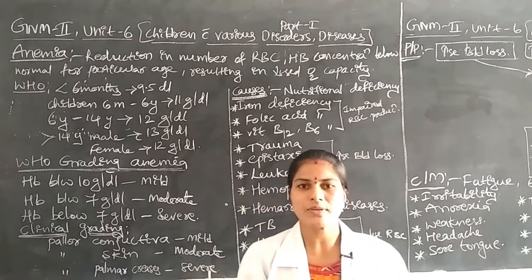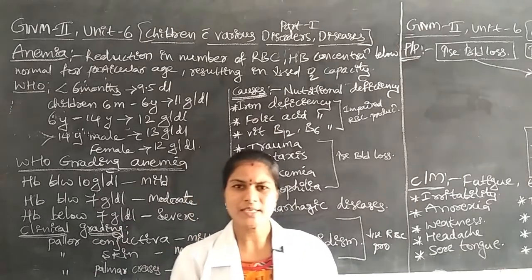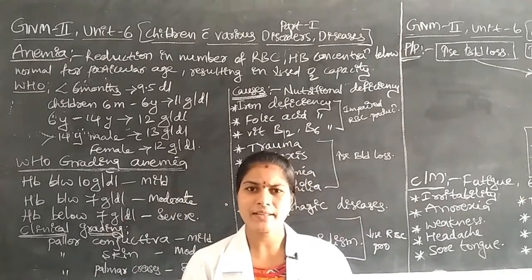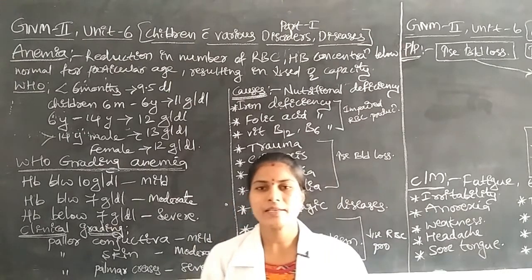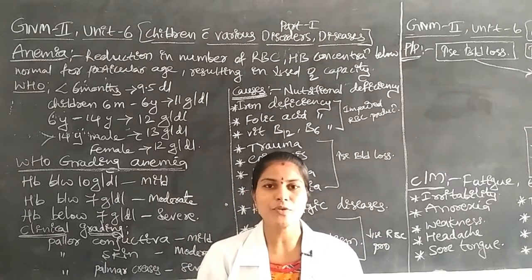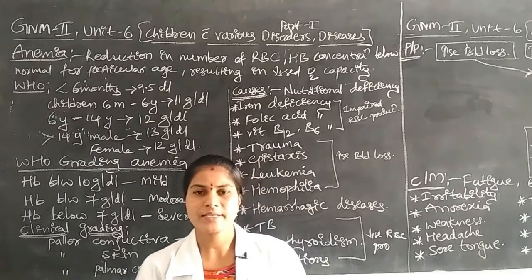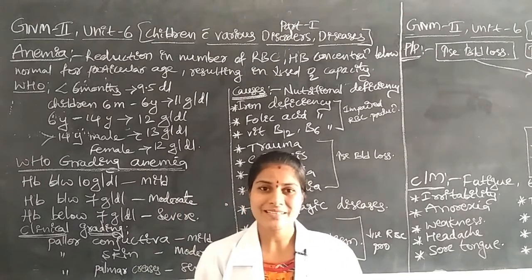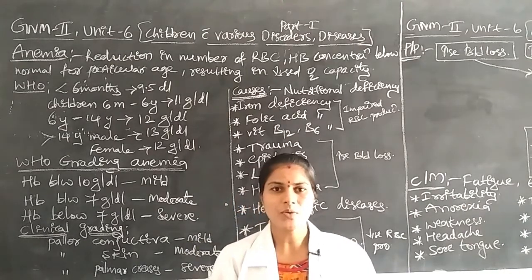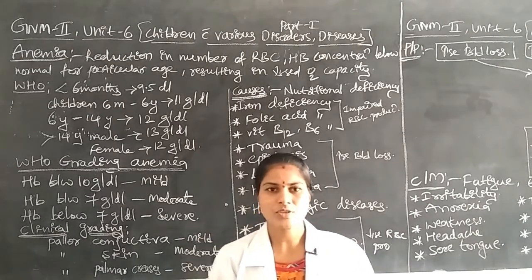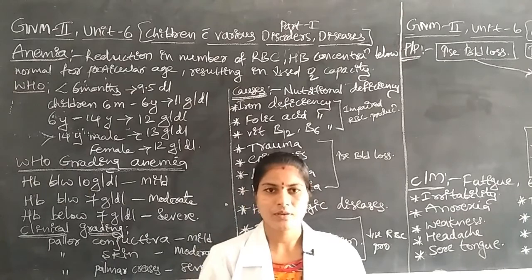Before discussing anemia in detail, we have to learn about RBC — red blood cells. RBC is present in the blood and has one important function: transportation of nutrients and transportation of oxygen. In the presence of RBC, oxygen is transported from the lungs to tissues.